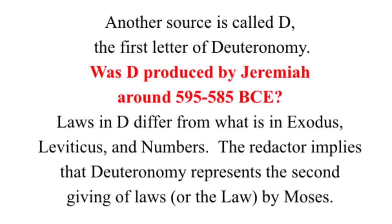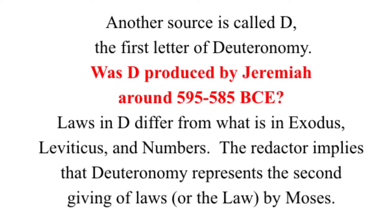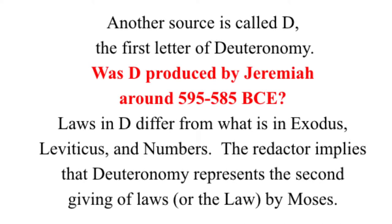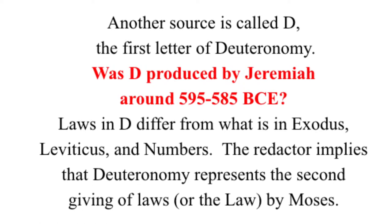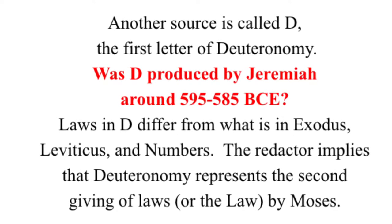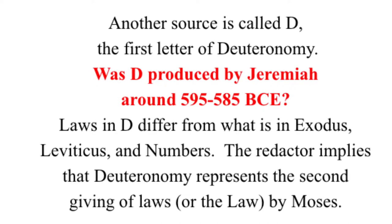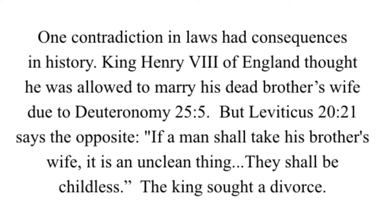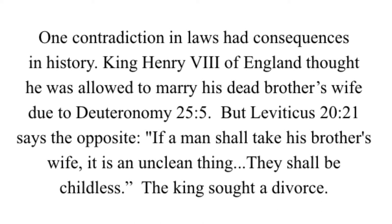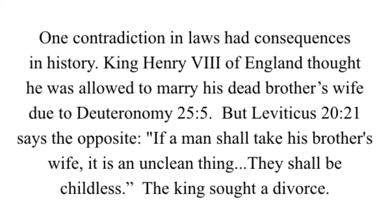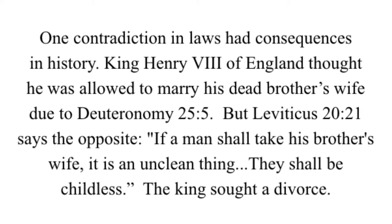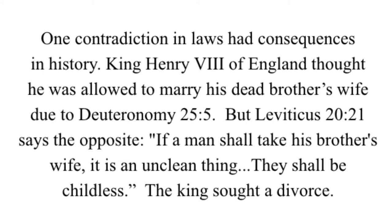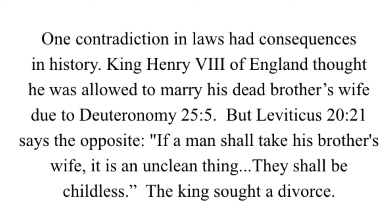Another source is called D, the first letter of Deuteronomy. Laws in D differ from what is in Exodus, Leviticus, and Numbers. The redactor implies that Deuteronomy represents the second giving of the law by Moses. One contradiction in laws had consequences in history: King Henry VIII of England thought he was allowed to marry his dead brother's wife due to Deuteronomy, but Leviticus says the opposite — 'If a man shall take his brother's wife, it is an unclean thing; they shall be childless.' The king sought a divorce.